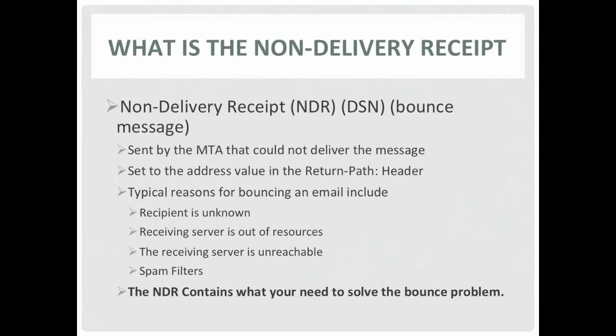There are many reasons why an email may bounce. It might have bounced because the recipient's address is misspelled or simply does not exist on the receiving server — typically reported as a user unknown condition. Or it might have been rejected because the receiving server is out of resources such as memory, disk space, or CPU cycles. Or it could be undeliverable because the receiving server is down or off the network. Or it might have been rejected because spam filters rejected the message. The important thing to remember is that the NDR contains the information you need to solve the bounce problem.